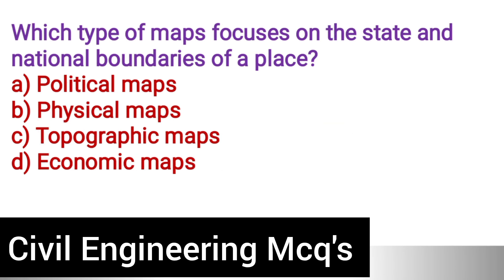Next question: Which type of map focuses on the state and national boundaries of a place? Option A: Political maps. Option B: Physical maps. Option C: Topographic maps. Option D: Economic maps. The correct answer is option A, political maps.